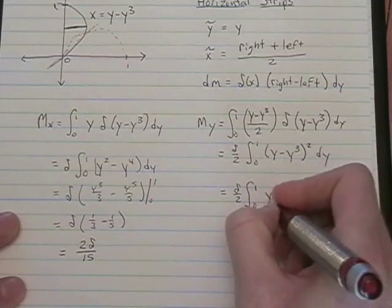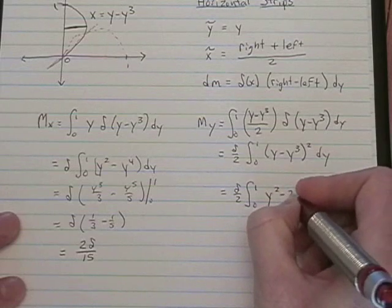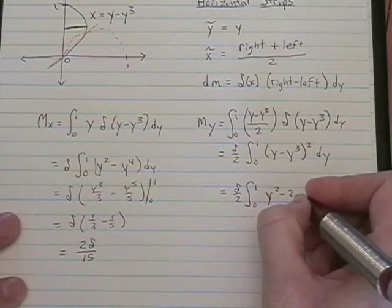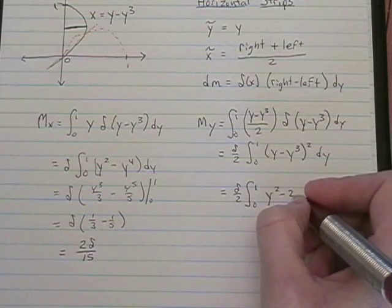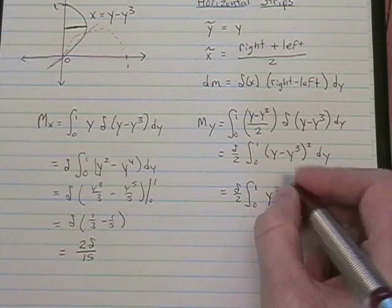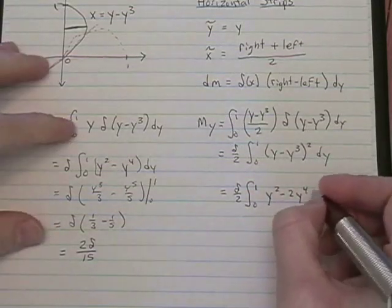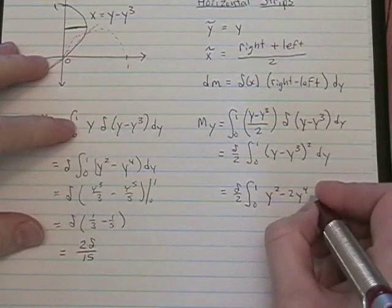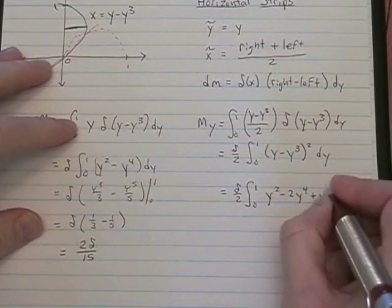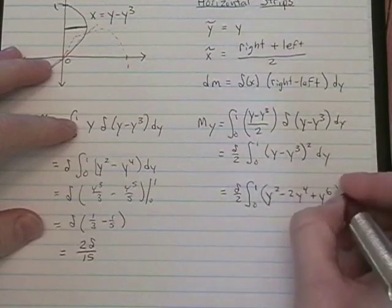Which is y squared minus 2 y to the 4th, and then plus y to the 6th, dy.